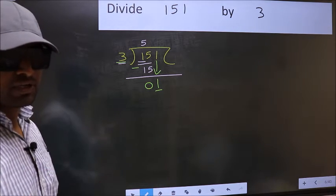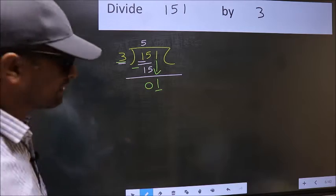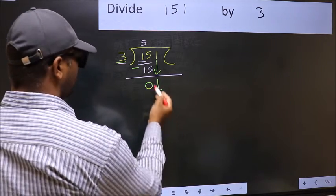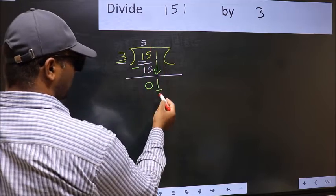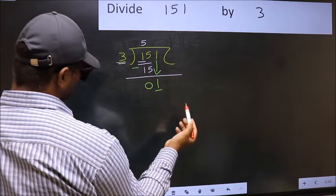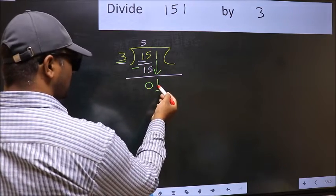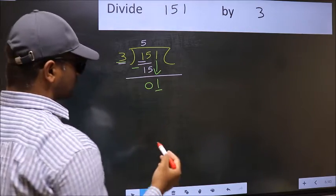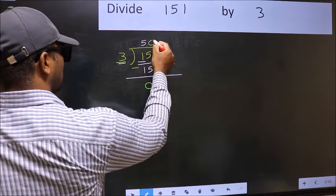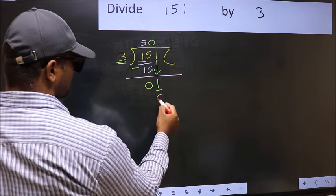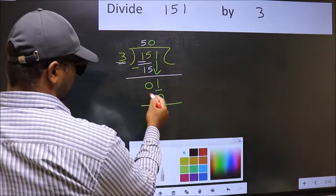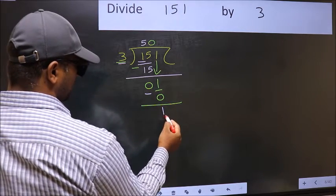Instead, what you should think of is, what number should be right here. If I take 1, I will get 3 here. But 3 is larger than 1. So, what option left out is, we should take 0. So, 3 into 0, 0. Now you subtract. 1 minus 0, 1.